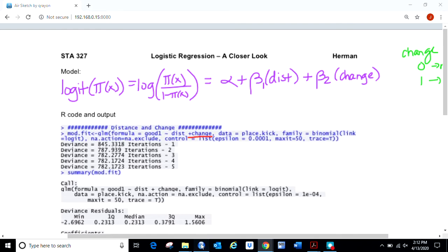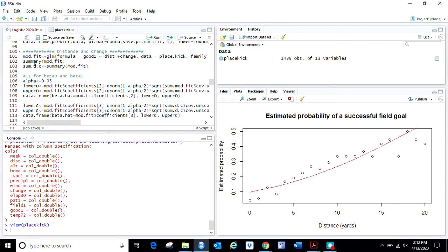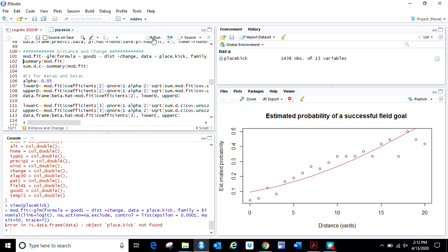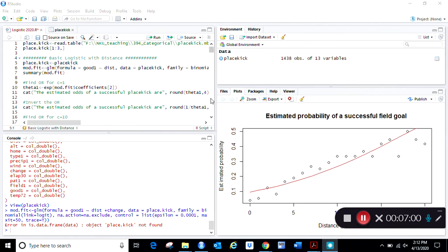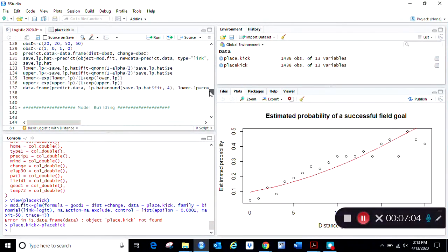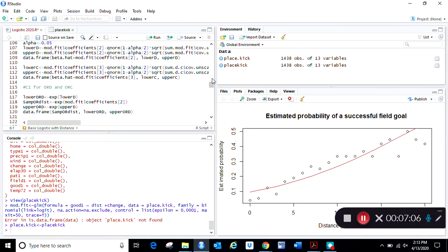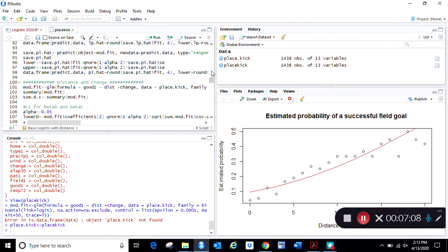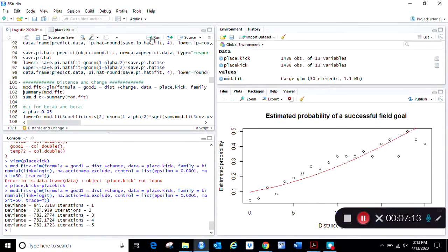So when I go to R, I already have my data set loaded in here. I can just run that model, making sure I'd already run where I renamed my data set. Now I can run it. Now we got our new model that takes into account both distance and change. I'm going to get that summary of what's inside of that.